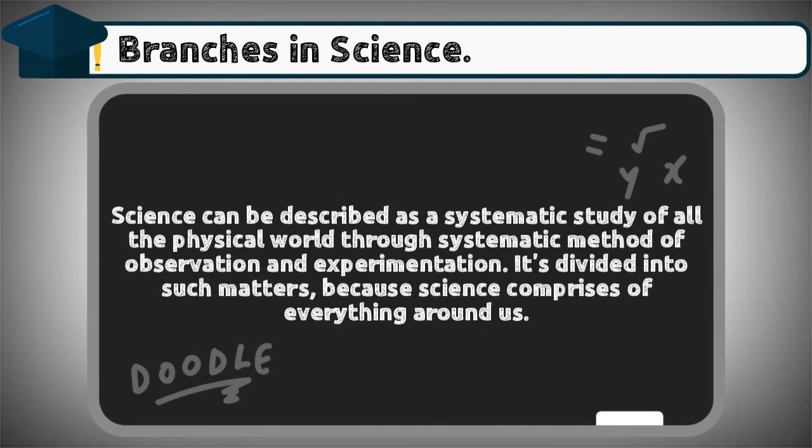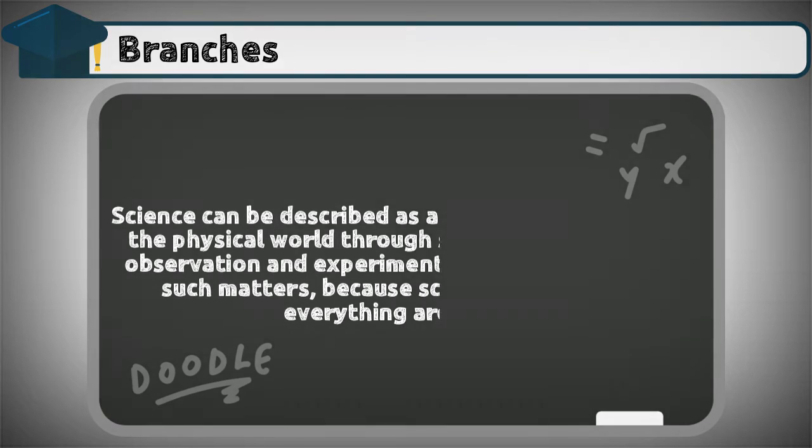Science can be described as a systematic study of all the physical world through systematic method of observation and experimentation. It's divided into such matters because science comprises of everything around us.